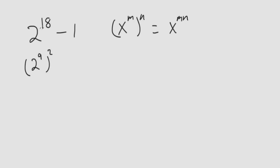Just multiply this across and get back this. So we can actually just multiply this out. 2 to the 9 is a lot easier than 2 to the 18th. So 2 times 2 is 4, times 2 is 8, times 2 is 16, times 2 is 32, times 2 is 64, then 128, then 256, then 512. So 2 to the 9 is equal to 512.